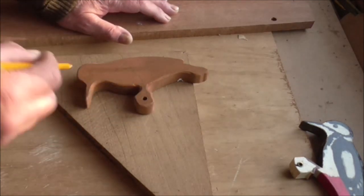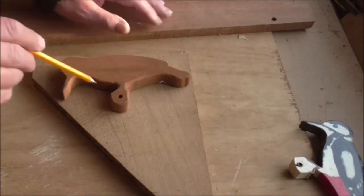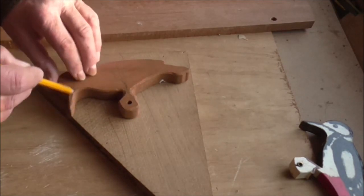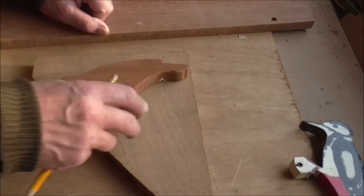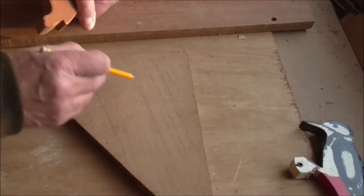So really, you don't want the grain running that way along the woodpecker, because it would easily snap off there. If you could have the grain running that way, down the beak and down through that pivot point, it'll make it much stronger.